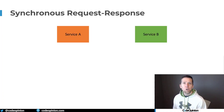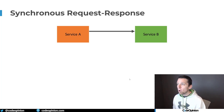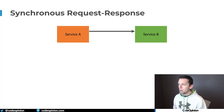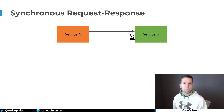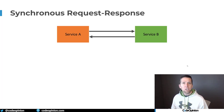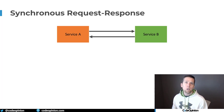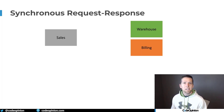Let's compare and contrast synchronous versus asynchronous. With synchronous request-response, we have service A that needs to make a call to service B — let's say over an HTTP API or gRPC. We make that request, and while service B performs its work — getting data, performing some action — we're blocking service A. Service A is sitting there waiting for the response. Once service B is finished, it returns the result to service A to let it know the request is complete.